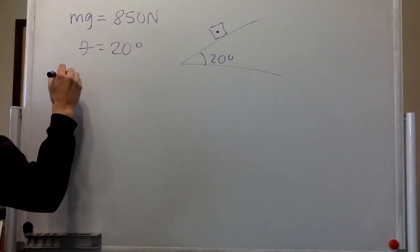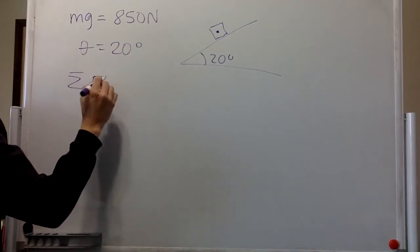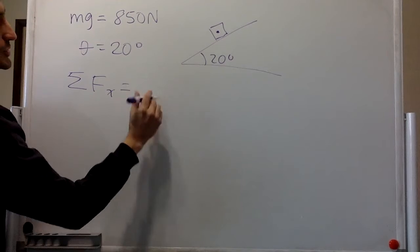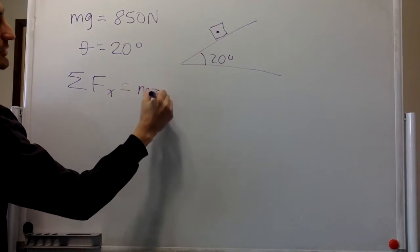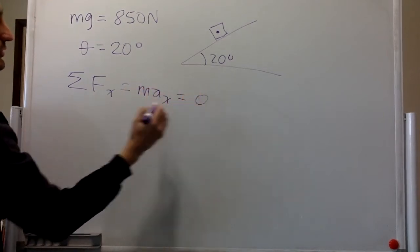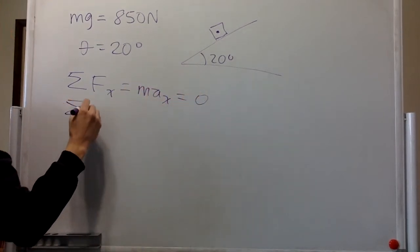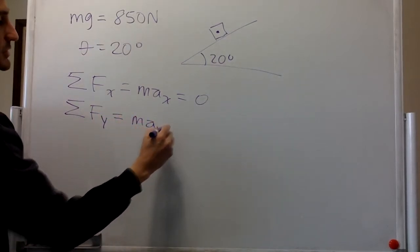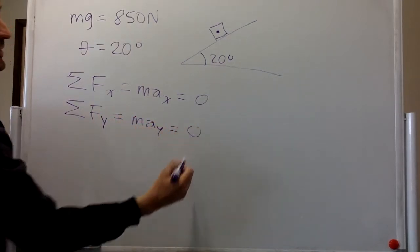Mathematically, we will write that as sum of forces in x, which is equal to mass times acceleration in x, is 0. And sum of forces in y, which is mass times acceleration in y, is 0.